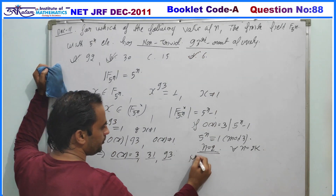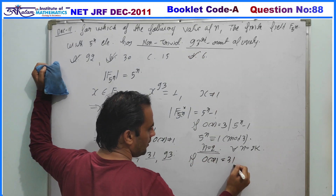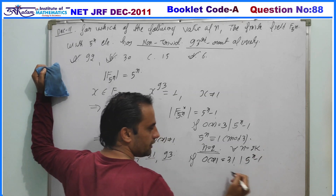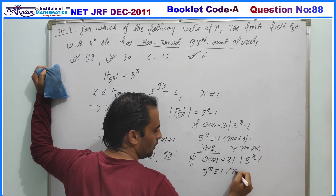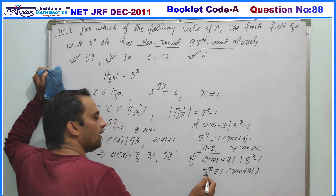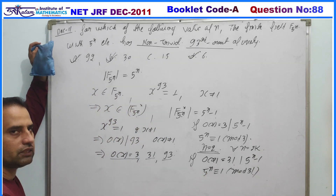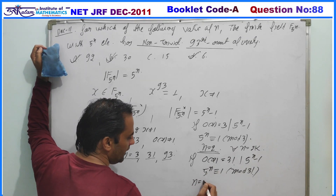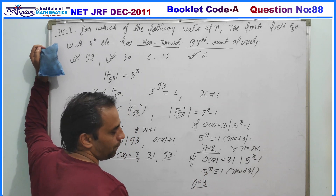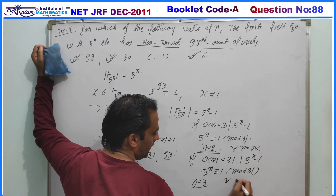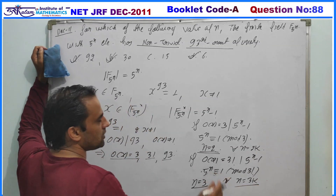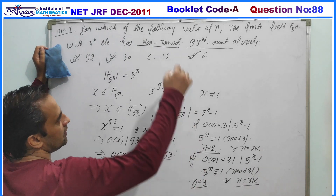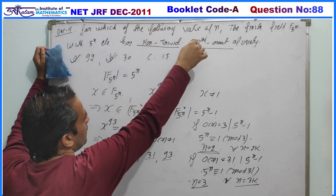If the order of x is 31, then 31 must divide 5^n - 1, that is 5^n ≡ 1 (mod 31). The values of n for which this equation has a non-trivial solution: taking n = 3 this equation has a solution, which implies for all n = 3k this equation must have a solution. Hence every value of n which is a multiple of 3 gives a field with a non-trivial 93rd root of unity.